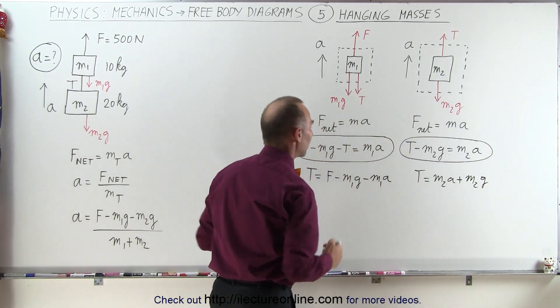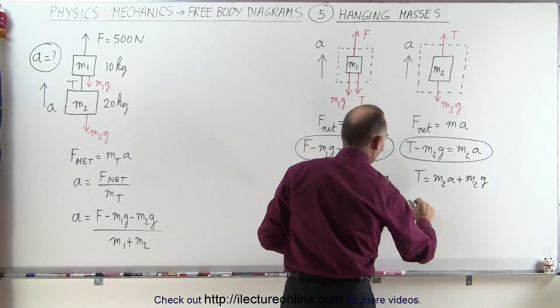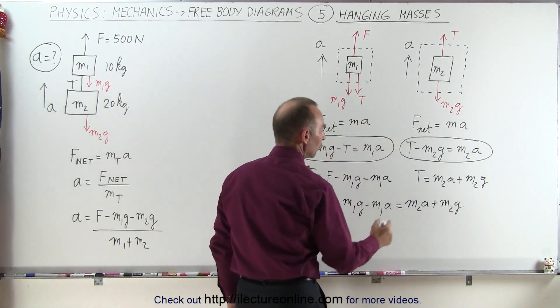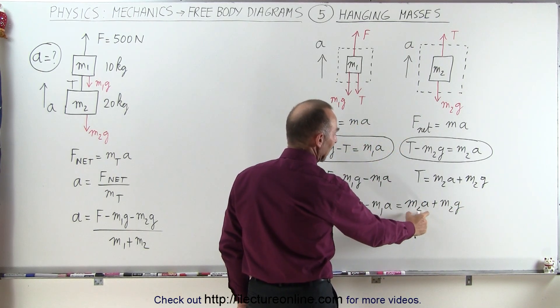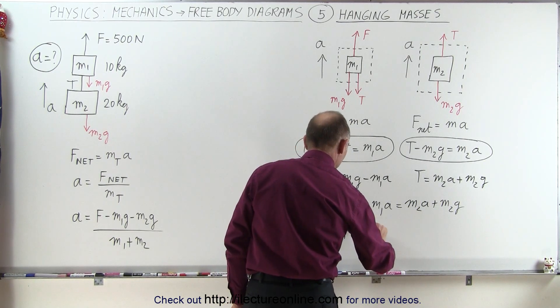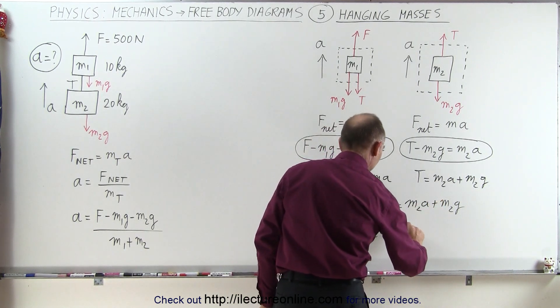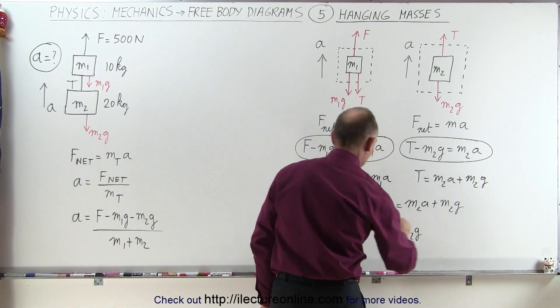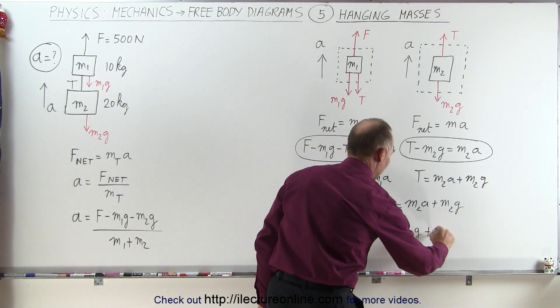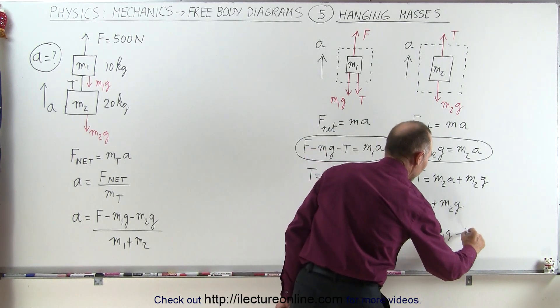Now we set the two equations equal to each other, so we can say that f minus m1 g minus m1 a equals m2 a plus m2 g. I'm going to move all the terms that have an a in it to the left, everything else to the right, so we have minus m1 a minus m2 a is equal to, on the right side we have m2 g, and then we move the m1 g across, so we get that would be plus m1 g, and move the f across that becomes minus f.